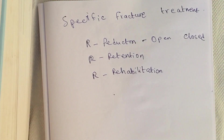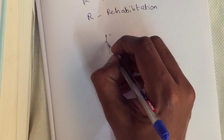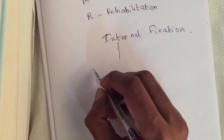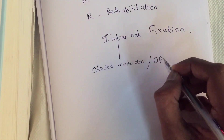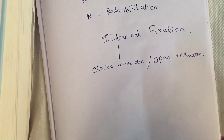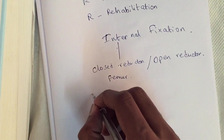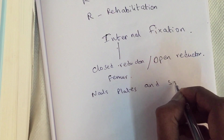Retention is when, after the fracture is aligned correctly, the bone is retained in its anatomical position using various methods until the fracture heals. There are two ways of retention. The first is retention by internal fixation, done by closed or open reduction. For example, fracture of femur in an adult. For internal fixation, nails, plates, and screws are used.